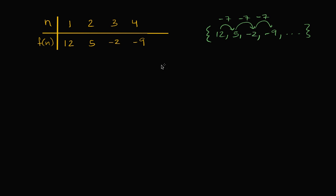Now with that out of the way, see if you can define this function — this function of n — explicitly. Figure out a function definition: f(n) equals what, so that if you input n, it gives you the appropriate f(n).